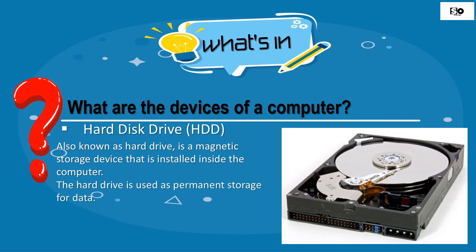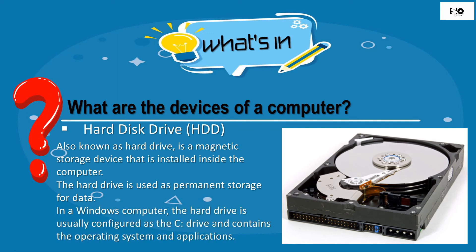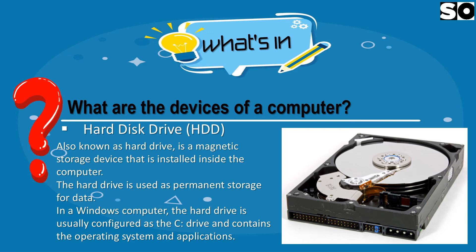Hard Disk Drive — it is used as permanent storage for data. In a Windows computer, the hard drive is usually configured as the C drive and contains the operating system and applications.